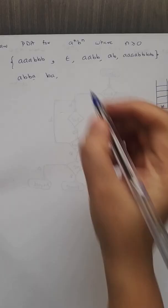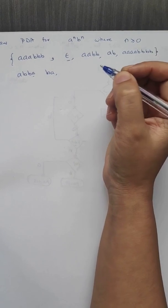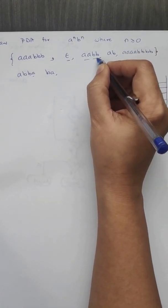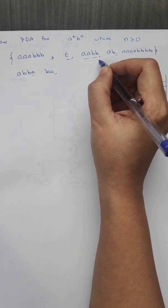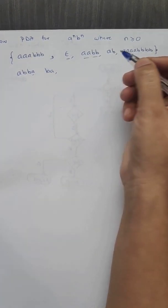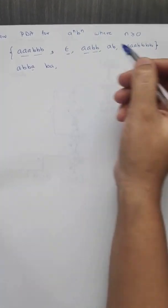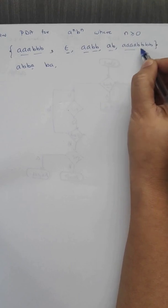Let us draw the PDA for a^n b^n where n is greater than or equal to zero. That means the epsilon string is a valid string. a^n b^n means equal number of a's followed by equal number of b's. So triple a followed by triple b is a valid string, epsilon is a valid string, ab is a valid string, and four a's followed by four b's is also a valid string.